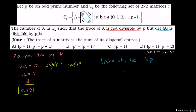One thing I'm starting to appreciate about IIT joint entrance exam problems is that when there are multiple choices, it might be faster to use the brute force method — not just proving mathematically which expressions are true, but trying a simple value of P, finding how many members of the set satisfy the condition, and seeing which expression equals that. So let's set P equal to 3.